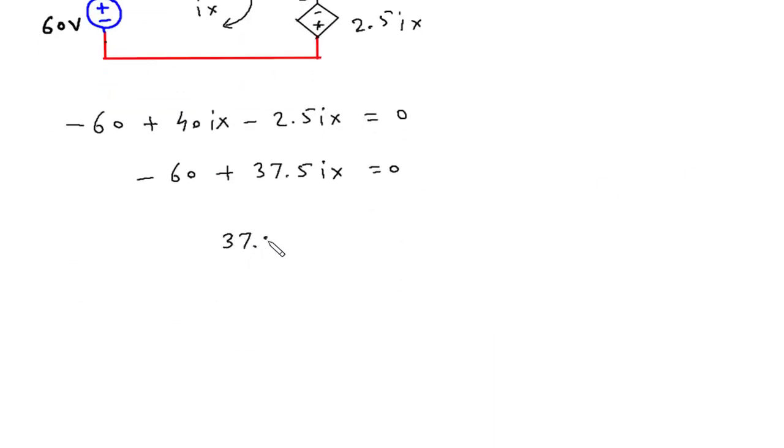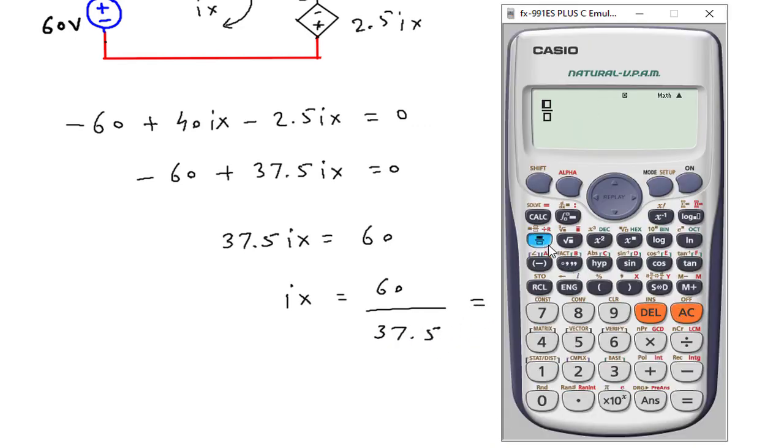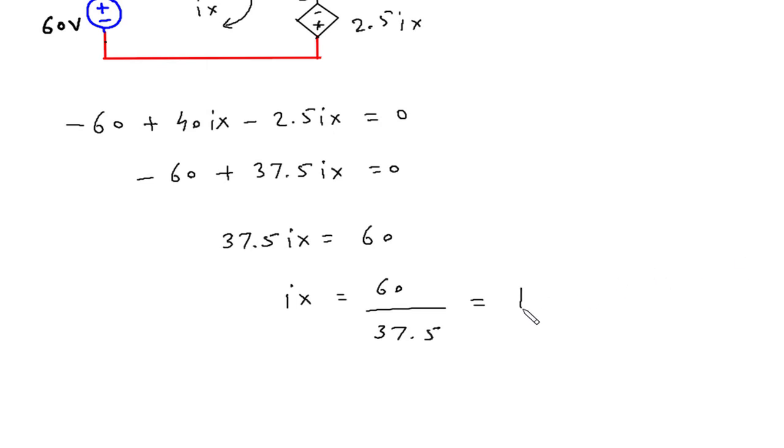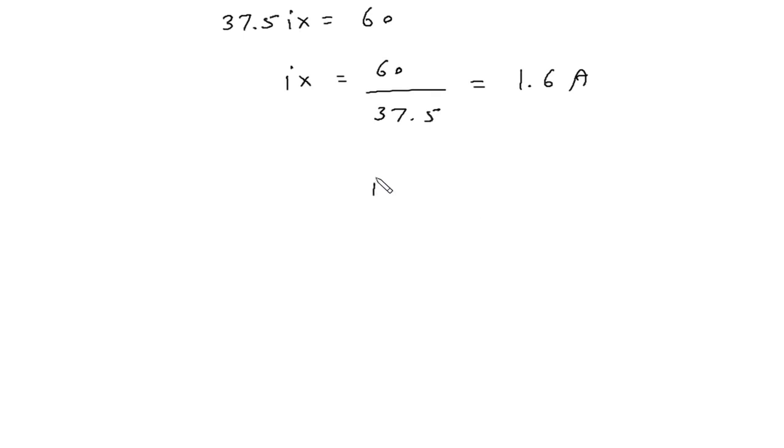Minus 60 plus 40Ix minus 2.5Ix is equal to 0. Minus 60 plus 37.5Ix equals 0. 37.5Ix equals 60. Therefore, Ix is equal to 60 divided by 37.5, which is 1.6. 1.6 Ampere is the value of Ix.